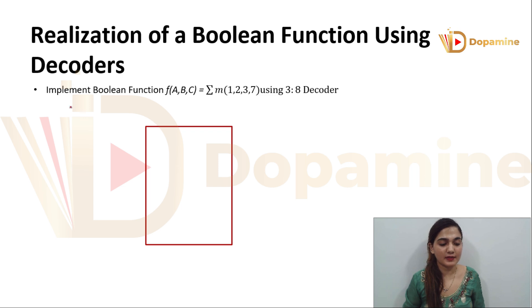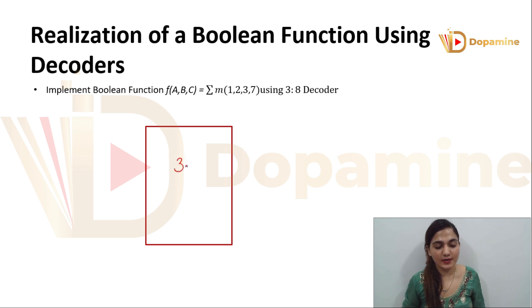So the question is: implement Boolean function f(a, b, c) = summation of minterms 1, 2, 3, 7 using a 3-to-8 decoder. So basically we have a 3-to-8 decoder.